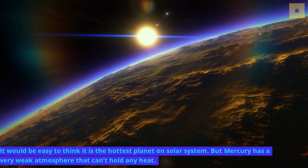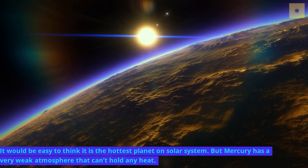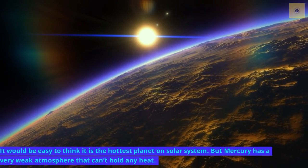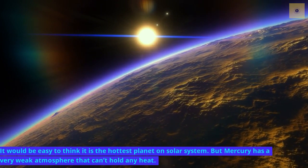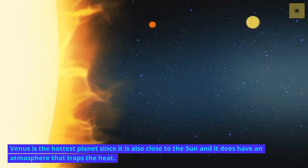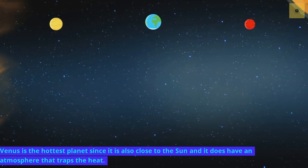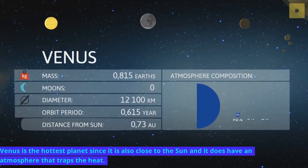It would be easy to think it is the hottest planet in the solar system, but Mercury has a very weak atmosphere that can't hold any heat. Venus is the hottest planet since it is also close to the Sun and it does have an atmosphere that traps the heat.